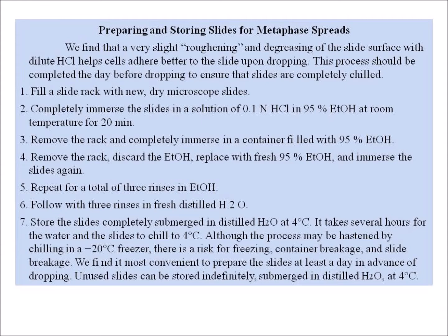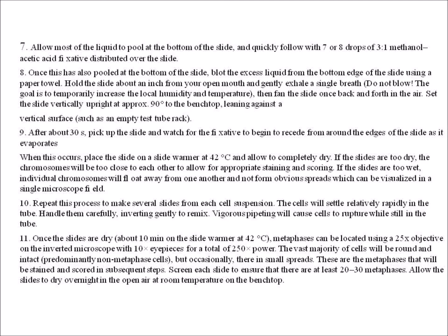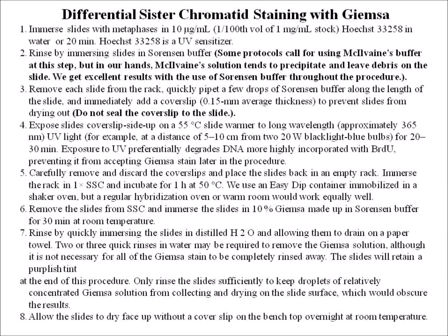The next steps involve preparing and storing slides for metaphase spreads, and then preparing the metaphase spreads themselves. For differential sister chromatid staining with Giemsa: immerse slides with metaphase spreads in 10 mg/ml solution, then rinse by immersing slides in Sorensen buffer. Remove each slide from the rack and quickly pipette a few drops of Sorensen buffer along the length of the slide, then immediately add a coverslip.